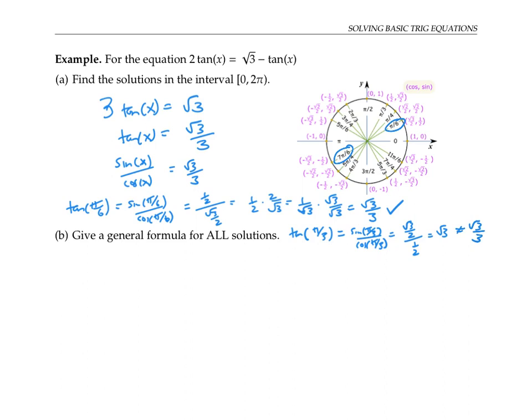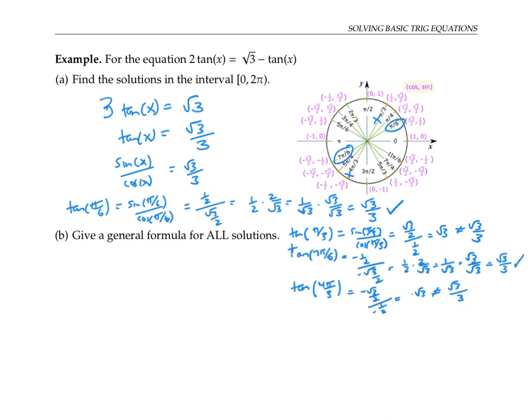But four pi over three does not. So my answer includes just the two values pi over six and seven pi over six.